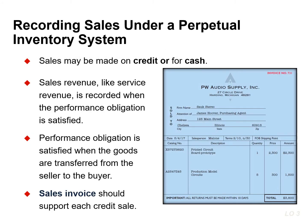Sales may be made on credit or for cash. In accordance with the revenue recognition principle, companies record sales revenue, just like service revenue, when the performance obligation is satisfied. Typically, this occurs when the goods are transferred from the seller to the buyer. Every sales transaction should be supported by a business document that provides evidence of the sale, called a sales invoice.